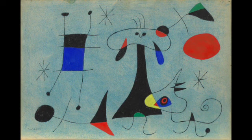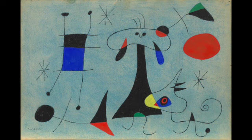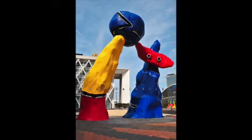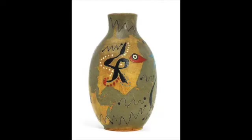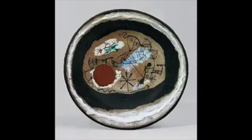Miro tried to paint with the purity and simplicity of a child. Not only did Miro make paintings, but he was also a sculptor. This sculpture is here in Washington, D.C. And he also made ceramics, vases, plates, and tiles.